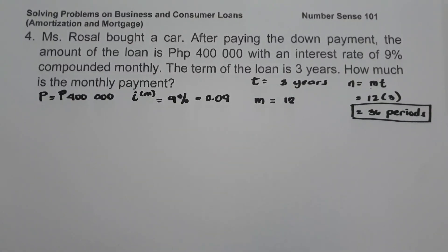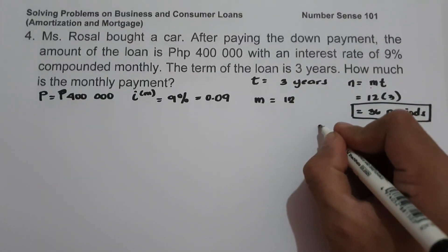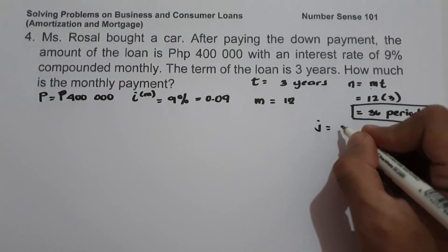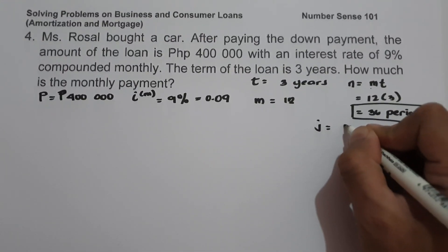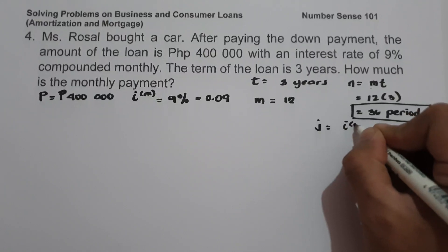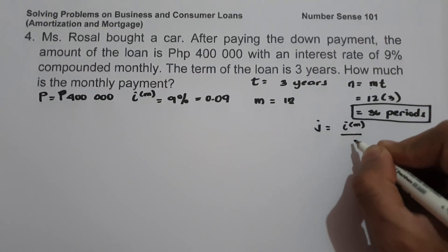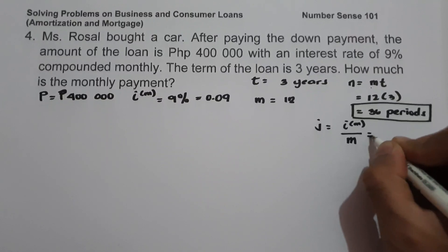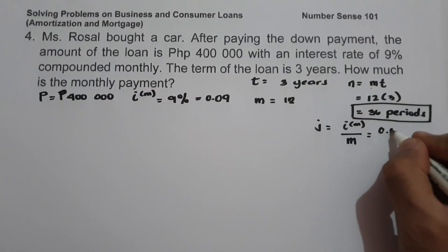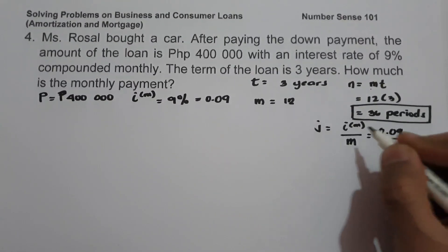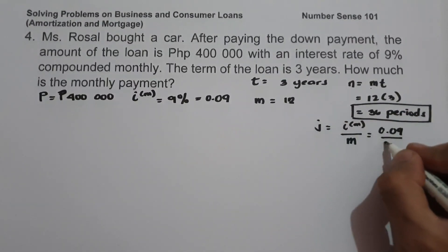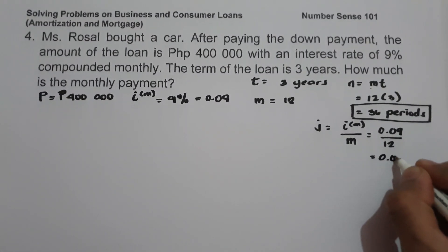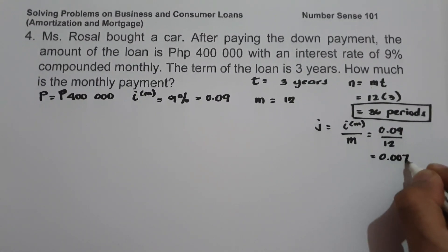To find the interest rate per period, j = annual rate ÷ m = 0.09 ÷ 12 = 0.0075.